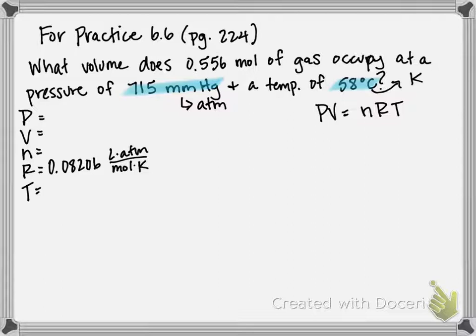So our pressure is 715 millimeters of mercury, but we're going to need to convert that. Our volume is what we're looking for. We're given moles as 0.556, which does not need to be converted. And we're also given our temperature, 58 degrees C.